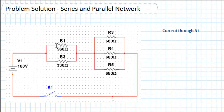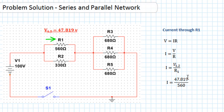The next part of the question is to find the current flowing through R1. Using Ohm's law and transposing for I, we get I = V/R. The voltage across the R1/R2 network is 47.819 volts and R1 = 560 ohms. So I = 47.819 / 560 = 0.0854 amps, which in standard form is 85.4 milliamps.